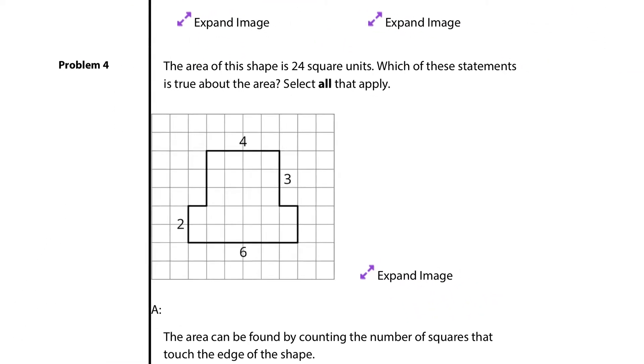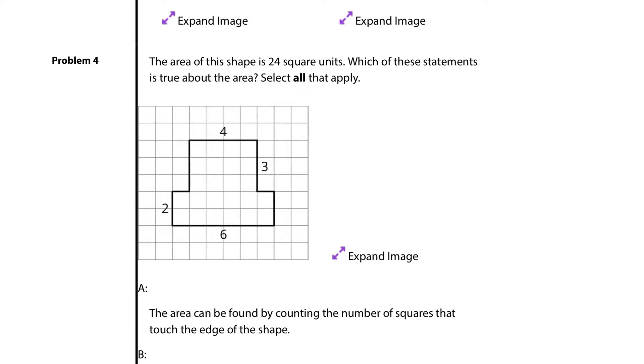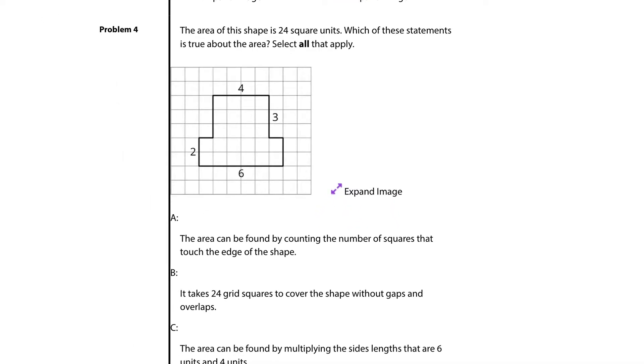Question 4. The area of this shape is 24 square units. Which of these statements is true about the area? Select all that apply. A. The area can be found by counting the number of squares that touch the edge of the shape. Well, as we're touching the edge of the shape here, that would be just by counting along the edge. That is actually not true.